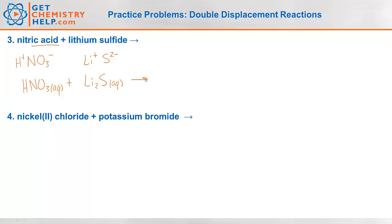Now let's predict our products. We swap out the nitrate for the sulfide, making hydrogen with sulfide — H₂S. Remember, this is one of our special gas evolution products — that stinky, rotten egg-smelling sulfur gas. So H₂S is a gas. The other product is lithium with nitrate, giving LiNO₃. All lithium and all nitrate compounds are soluble, so this is aqueous.